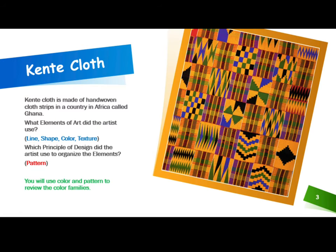Kente cloth is made of hand woven cloth strips in a country in Africa called Ghana. What elements of art did the artist use? Line, shape, color, texture. What principle of design did the artist use to organize the elements? Patterns. Good.